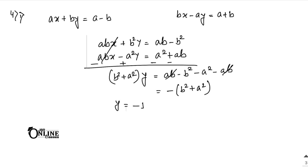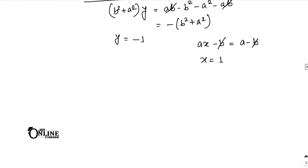With y equals minus 1, substitute into ax plus by equals a minus b: ax minus b equals a minus b, so the minus b terms cancel, giving ax equals a, thus x equals 1. Therefore x equals 1 and y equals minus 1.